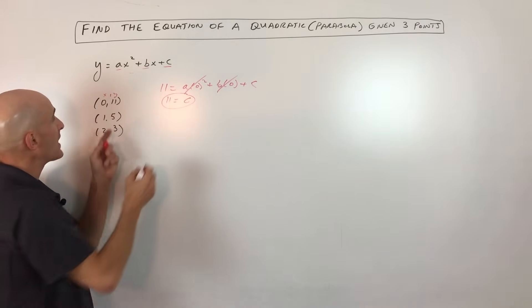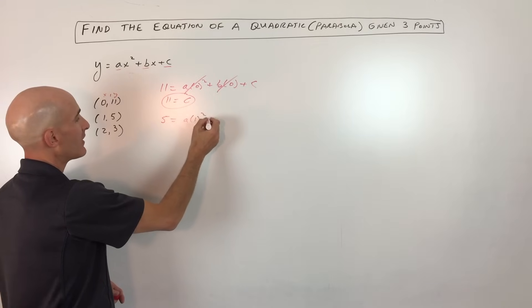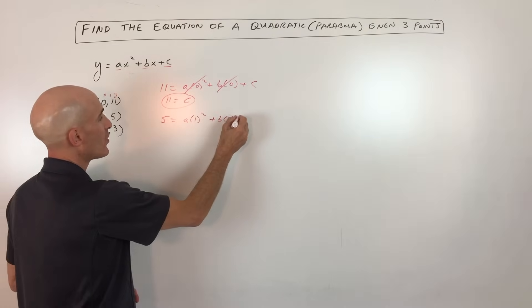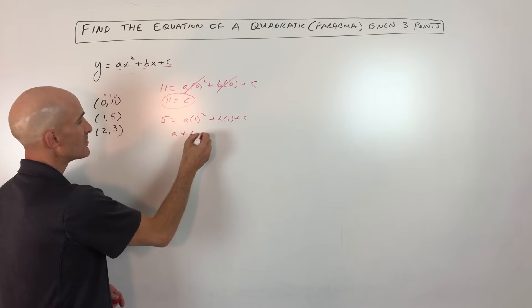Now the next one, if y is 5 when x is 1, we have a times 1 squared plus b times 1 plus c. Or if you simplify this, this would be a plus b plus c equals 5.